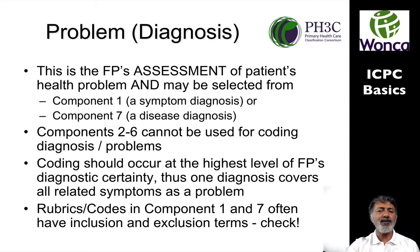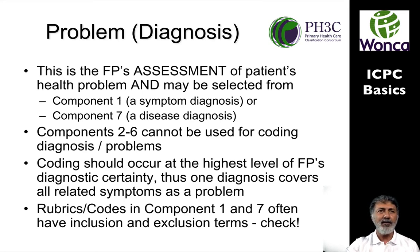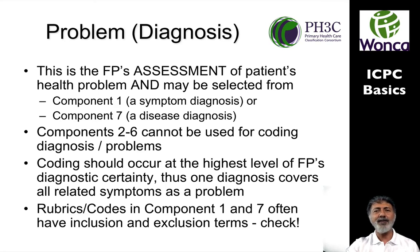Components two through six are processes, so they cannot be used for coding a problem. Coding should occur at the highest level of the family physician's diagnostic certainty. If there are lots of little problems, those don't become problems once you have a diagnosis — that diagnosis covers all related symptoms. Unless it's something exceptional outside of the diagnosis that you'd still want to retain as a problem label, your diagnosis covers all the related symptoms. Codes — the same word for rubrics — in components one and seven often have inclusion and exclusion criteria, so please check as you proceed.